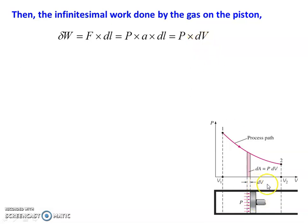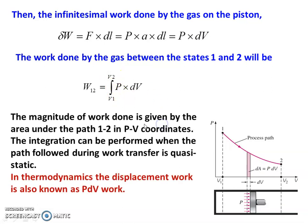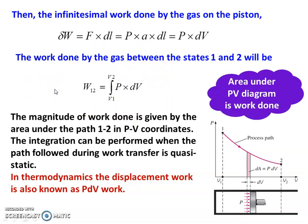The small work done equals the pressure acting on the piston surface times the small change in volume — this corresponds to a small area on the PV diagram. The total work done by the gas between state 1 and state 2 is W = ∫P dV, integrated from V1 to V2. The magnitude of work done is given by the area under the path 1–2 in the PV diagram. This integration can be performed when the path followed is a quasi-static process. The displacement work is also known as PDV work. Area under the PV diagram equals the work done.